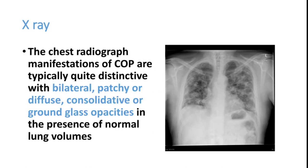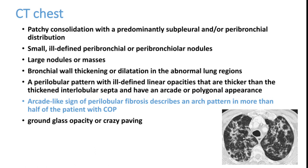On chest X-ray, bilateral extensive consolidation or ground-glass opacities can be seen, resembling pulmonary edema or ARDS. This is a classical finding. A patient with SLE or rheumatoid arthritis presenting with this bilateral extensive pneumonia should raise suspicion for cryptogenic organizing pneumonia. CT scan provides more diagnostic clues, showing bilateral extensive patchy consolidation and an important finding called the arcade-like sign.